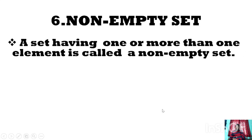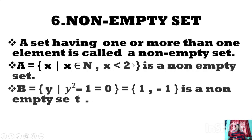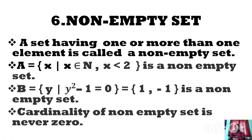Non-empty set: a set having one or more than one element is called a non-empty set. For example, set A = {X : X belongs to N, X < 2} is a non-empty set because it has one element. Another set V = {Y : Y² − 1 = 0} — solving this gives elements 1 and −1, so it is a non-empty set. The cardinality of a non-empty set is never 0, because it contains at least one or more than one element.